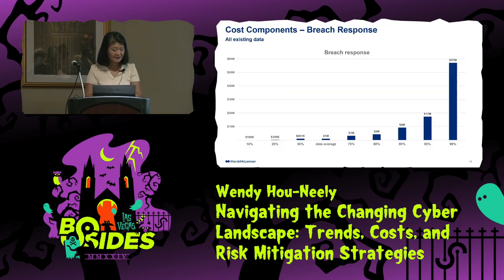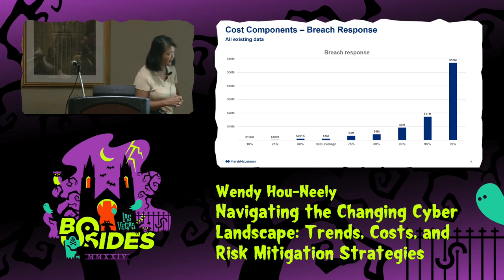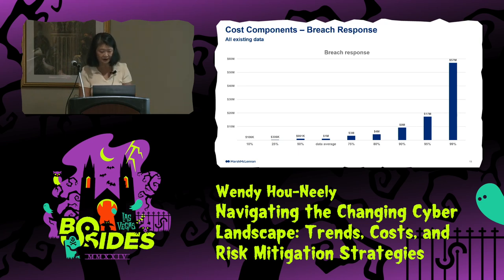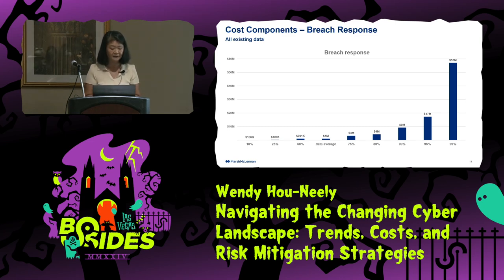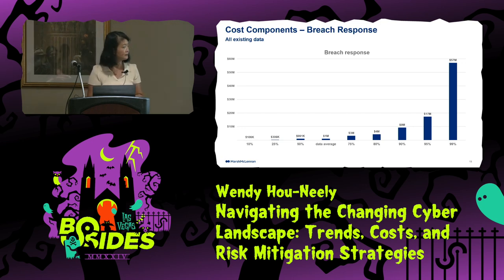Looking at existing data for breach response costs, the data average is right around $1 million. The 99th percentile is about $57 million. At the 50th percentile, one out of two is almost a million dollars. So the average and the 50th percentile come very close together.